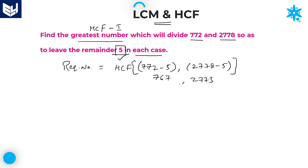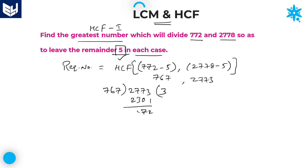You need to calculate the HCF of 767 and 2773. I will use the long division method. Divide the larger number by the smaller: 2773 divided by 767. 767 times 3 is 2301, subtract to get remainder 472. This division process continues until the remainder becomes 0.